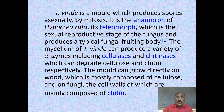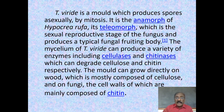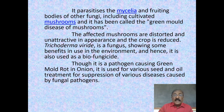Trichoderma viridae is a mold which produces spores asexually by mitosis. It is the anamorph of Hypocrea rufa, which is the teleomorph — the sexually reproductive stage of the fungus — and produces a typical fungal fruiting body. The mycelium of Trichoderma viridae can produce a variety of enzymes including cellulases and chitinases, which can degrade cellulosic cell walls and chitin cell walls respectively. The mold can grow directly on wood, which is mostly composed of cellulose, and on fungi whose cell walls are mainly composed of chitin. It parasitizes the mycelia and fruiting bodies of other fungi, including cultivated mushrooms.